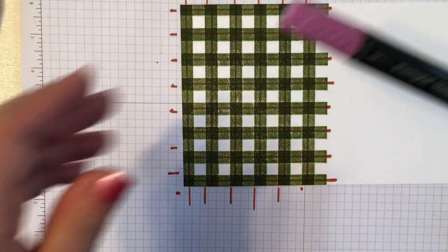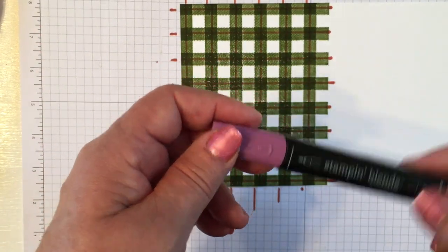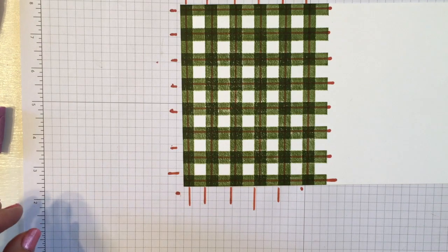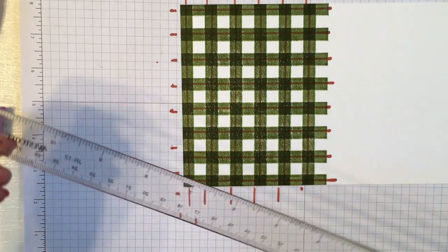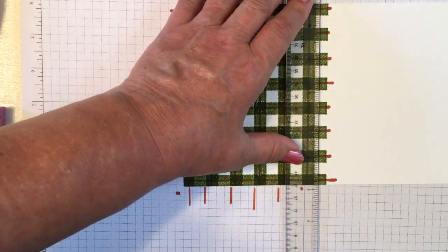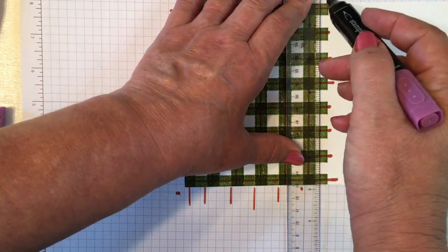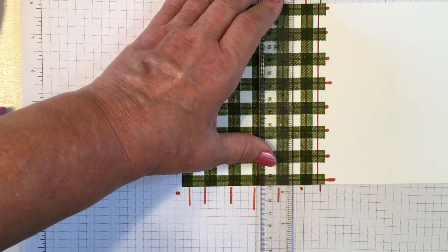Now I'm going to add a second color and this time I'm going to use the fine tip end of my pen and this is Rich Razzleberry. I'm going to do the same thing only I'm going to go in the white spaces this time across the white spaces.